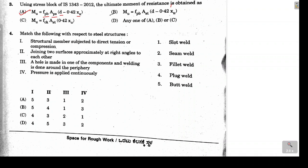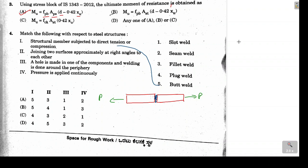The fourth problem asks us to match weld types to circumstances. For structural members subjected to direct tension or compression, we provide butt weld. Suppose two plates are connected with a tension or compression force — the weld at the joint is called butt weld. So the first statement matches with the fifth option.